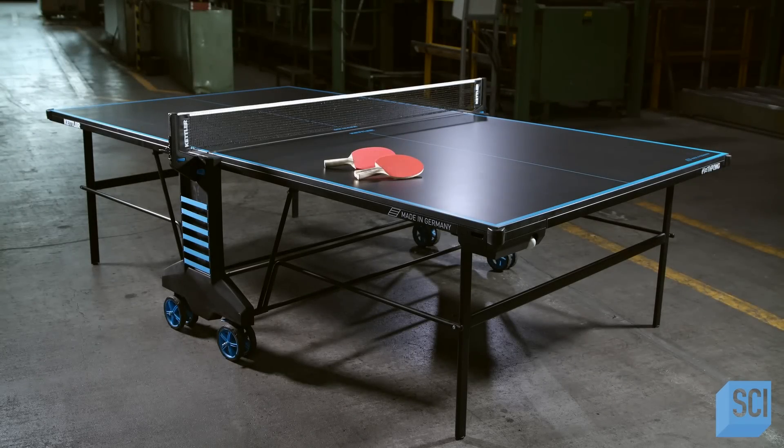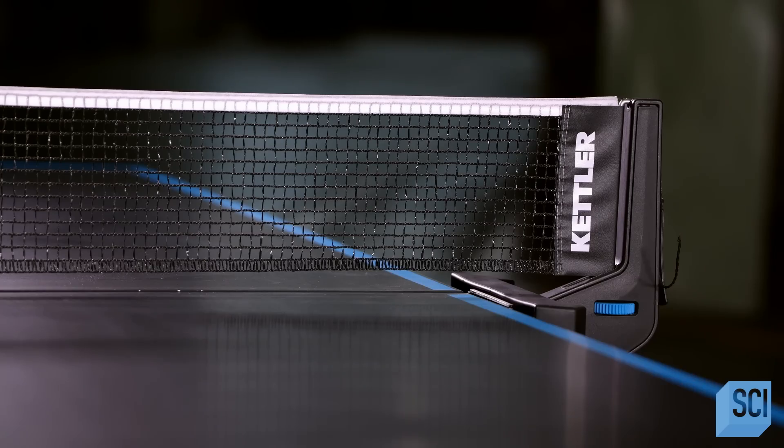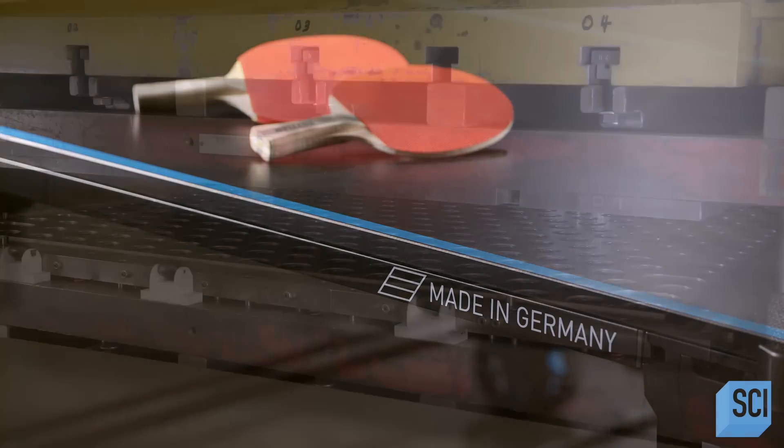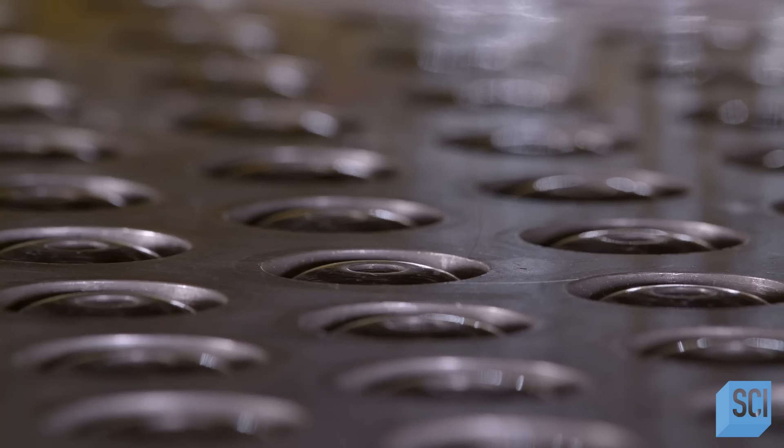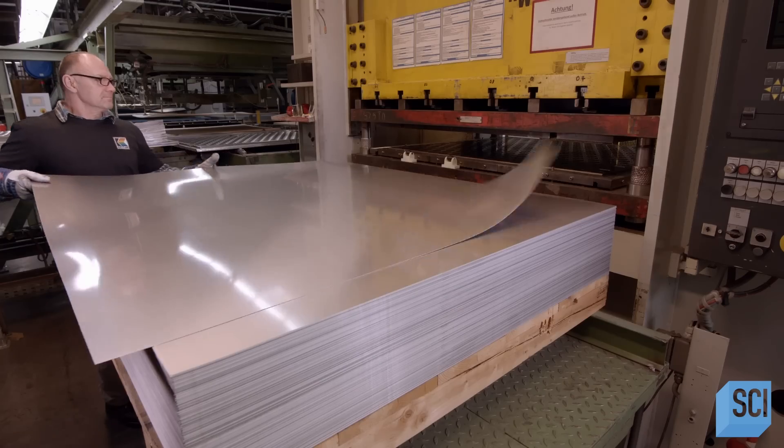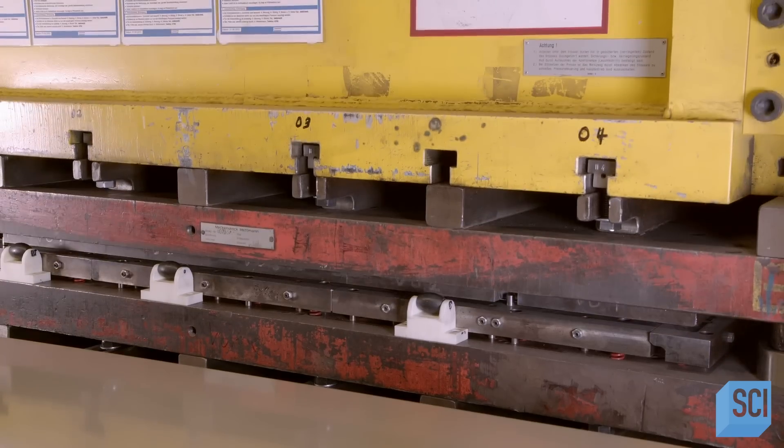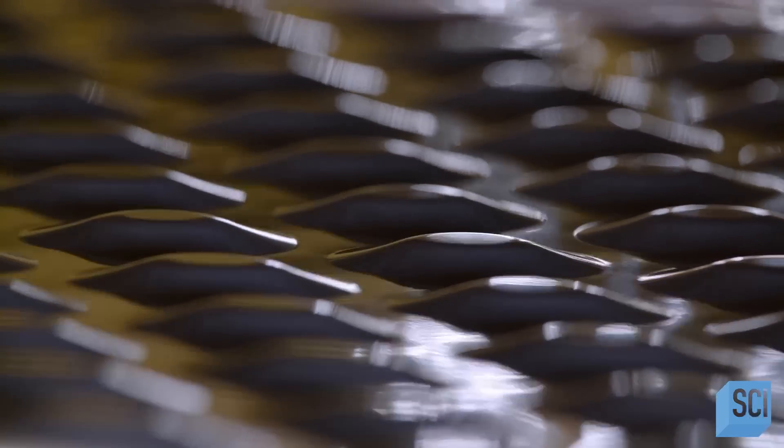This high-end outdoor table tennis table has an aluminum bottom that prevents the tabletop, called the plate, from warping or splitting due to expansion and contraction. A press stamps cups into a sheet of aluminum. This pattern creates nearly equal areas both in contact and out of contact with the rest of the plate layers, providing flexibility to withstand temperature-related movement.